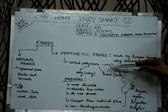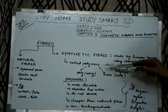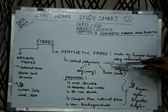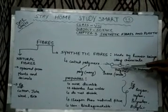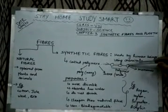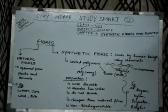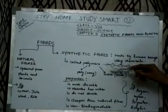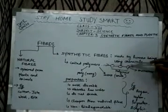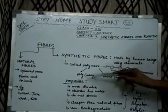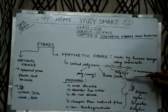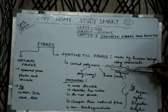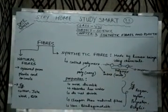Polymers are like beads in a necklace — a small chain of monomers. These small units are called polymers. 'Poly' means many and 'mol' means unit, so polymers means many units.